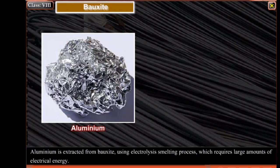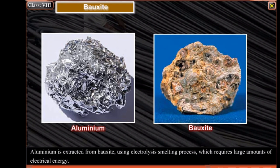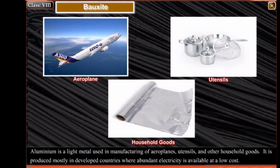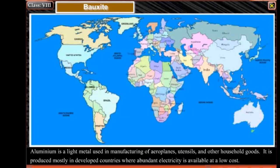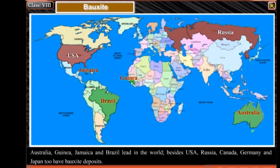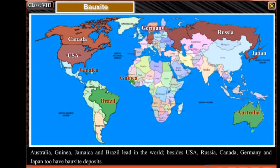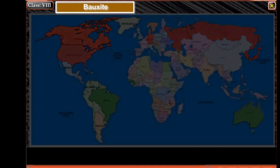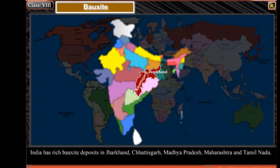Bauxite: Aluminium is extracted from bauxite using an electrolysis smelting process, which requires large amounts of electrical energy. Aluminium is a light metal used in manufacturing of aeroplanes, utensils and other household goods. It is produced mostly in developed countries where abundant electricity is available at a low cost. Australia, Guinea, Jamaica and Brazil lead in the world. USA, Russia, Canada, Germany and Japan also have bauxite deposits. India has rich bauxite deposits in Jharkhand, Chhattisgarh, Madhya Pradesh, Maharashtra and Tamil Nadu.